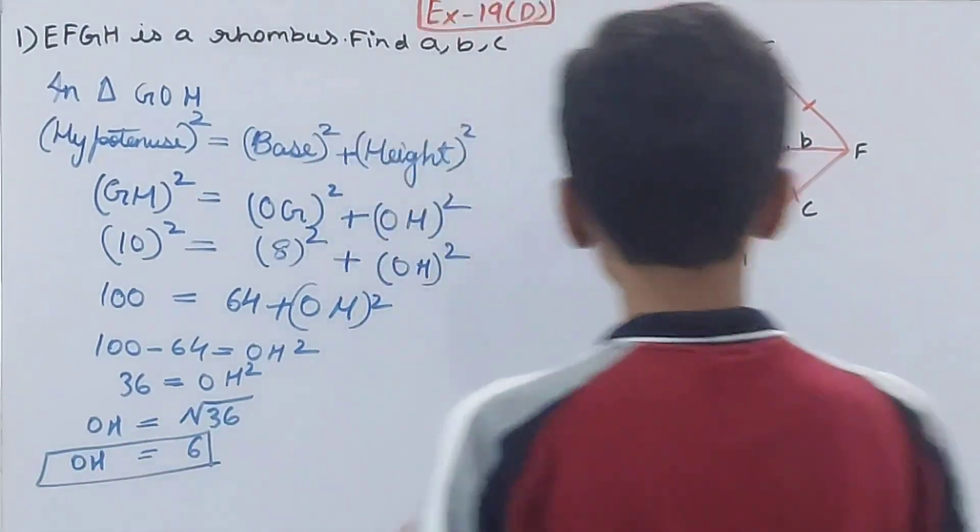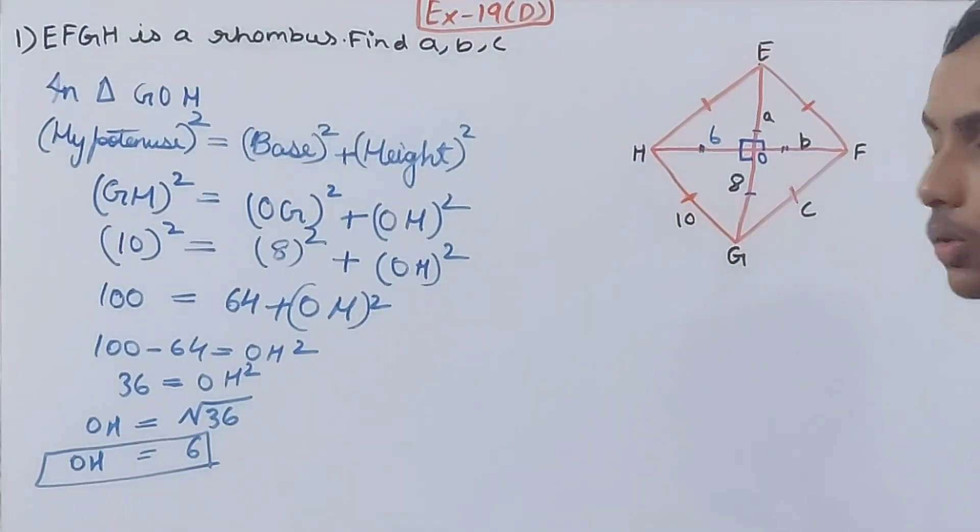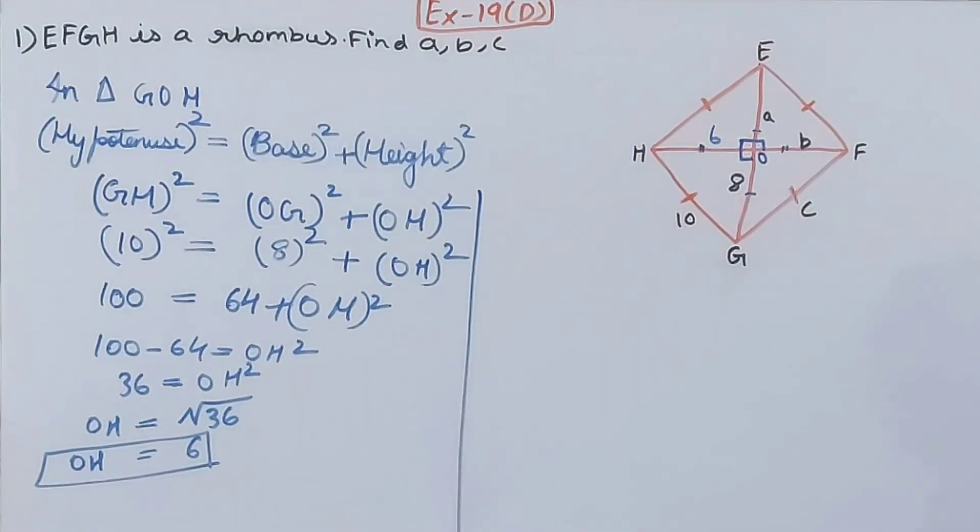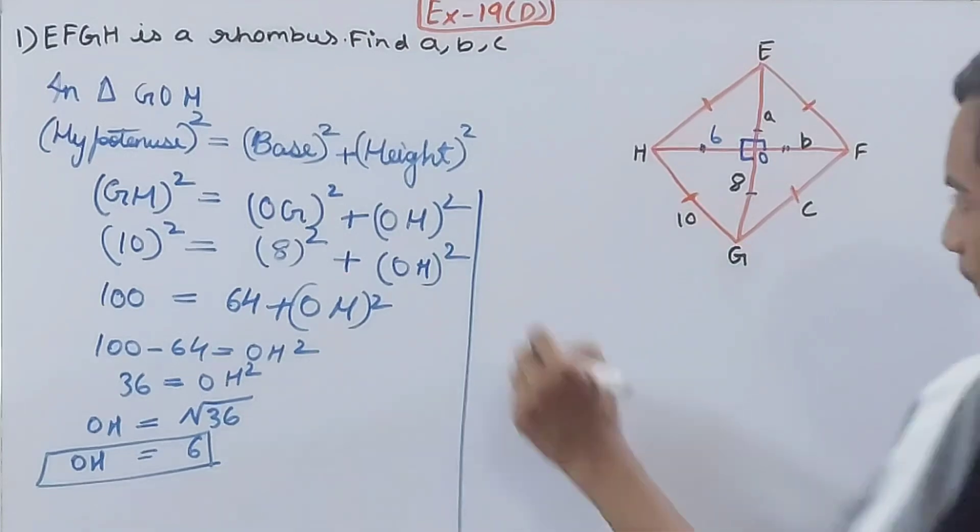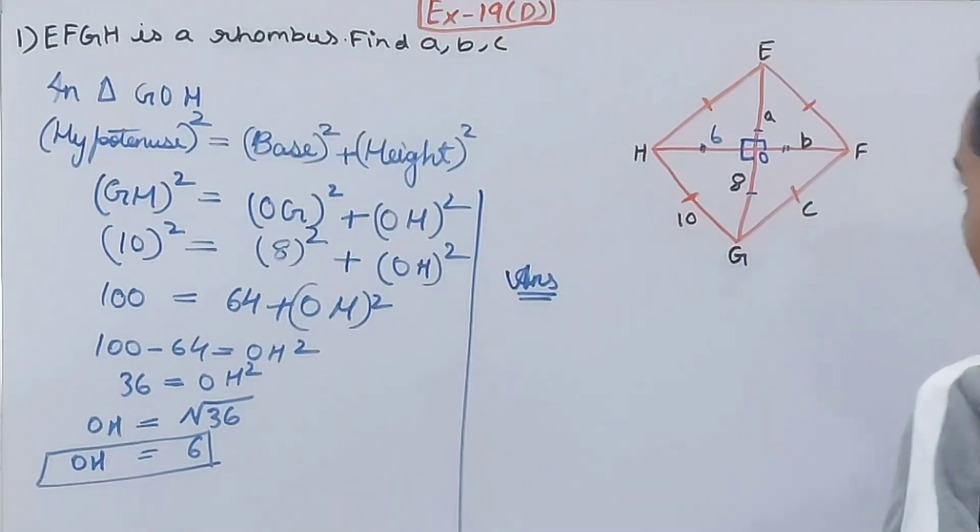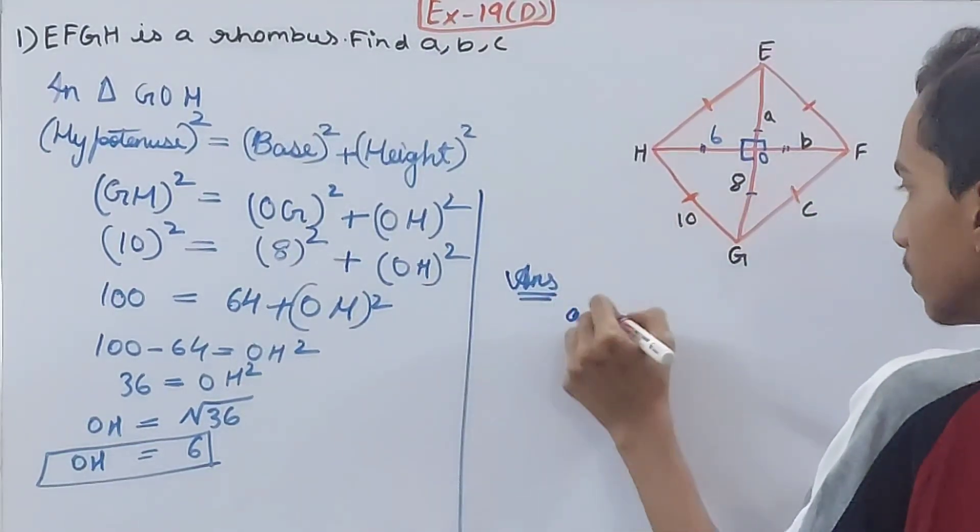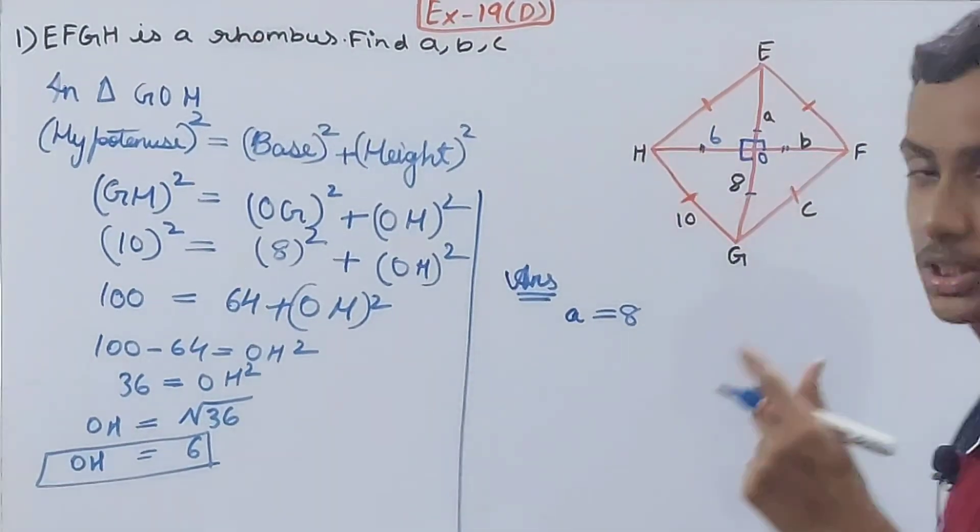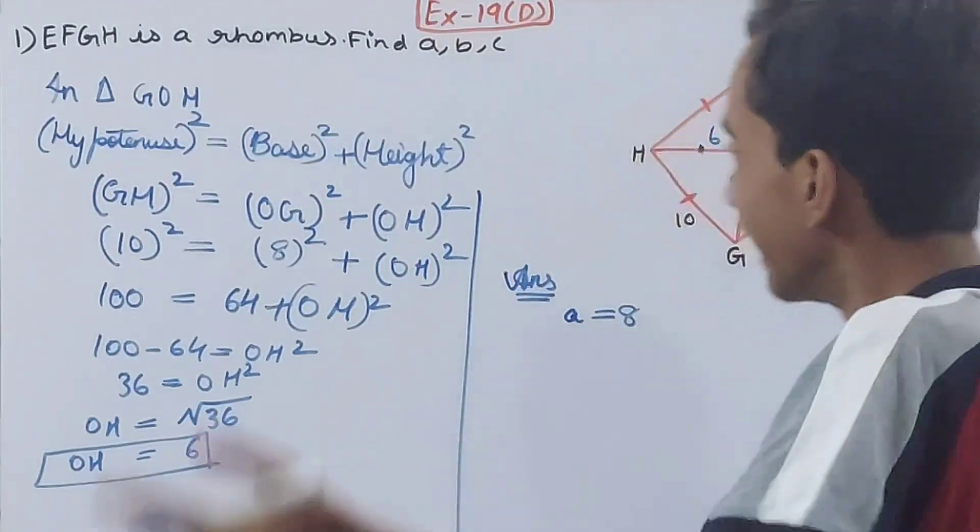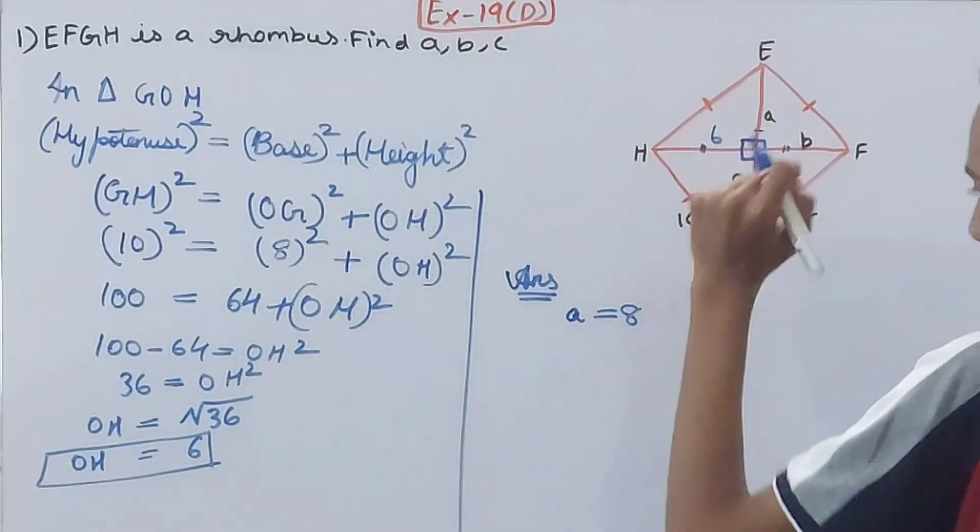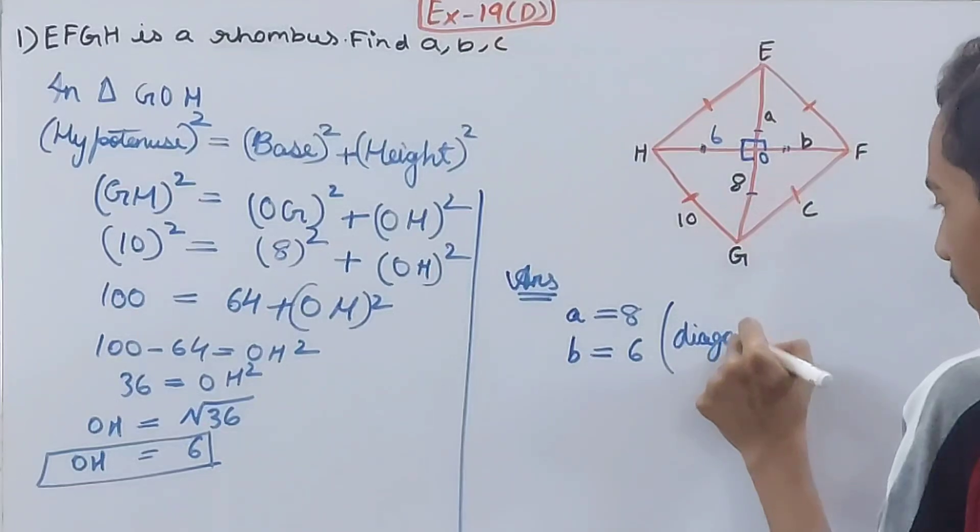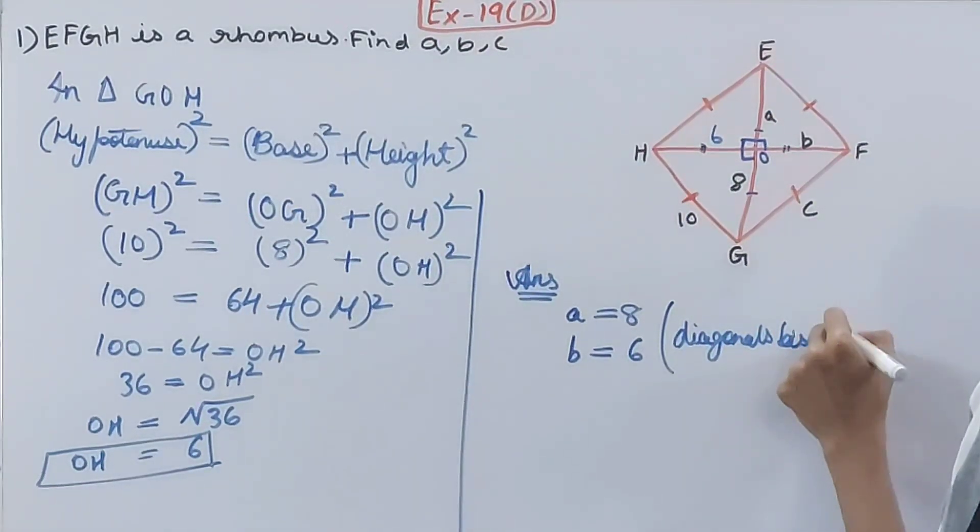One very important thing that will help us is that OH is equal to 6. Now there is nothing much left in this question. Directly you can write the answers. A will be equal to 8 because diagonals bisect each other, so 8 and a have the same measure. Same will come for the other diagonal, that is b and 6, so b will be equal to 6 as well because diagonals bisect each other